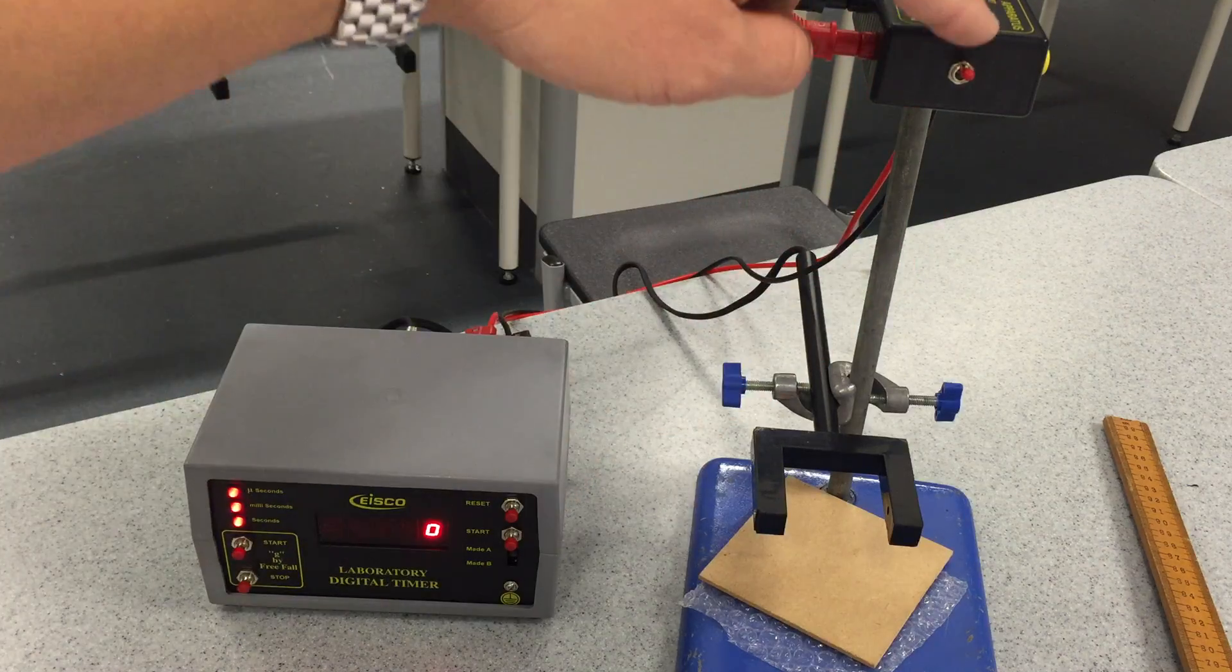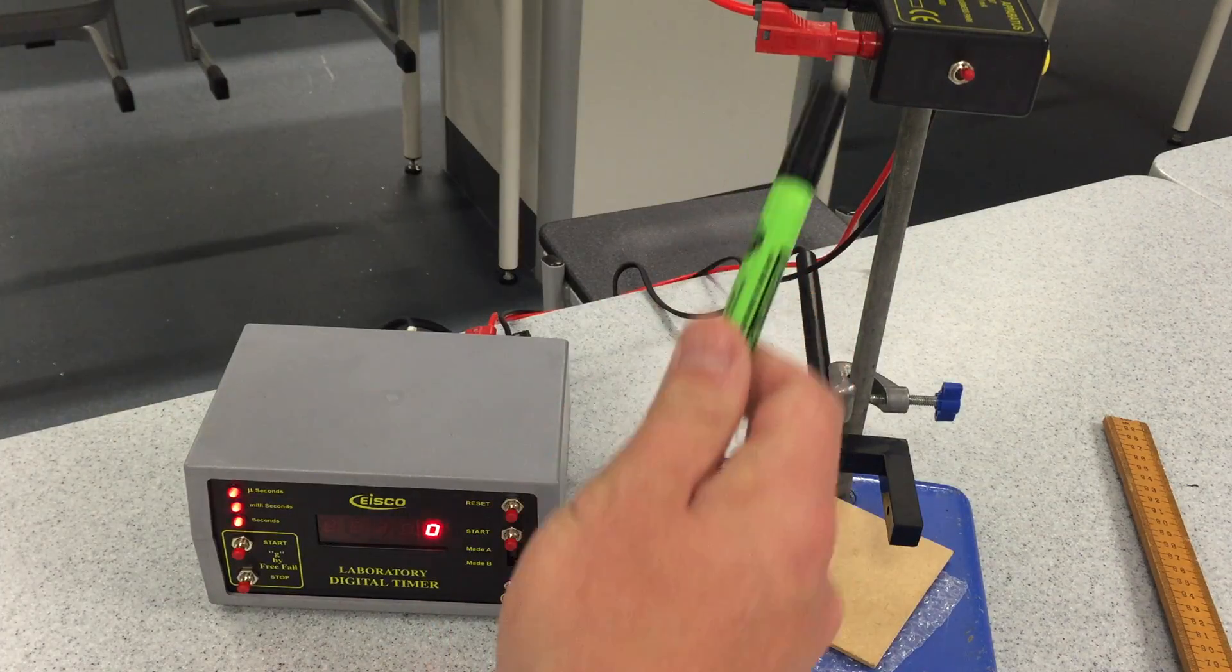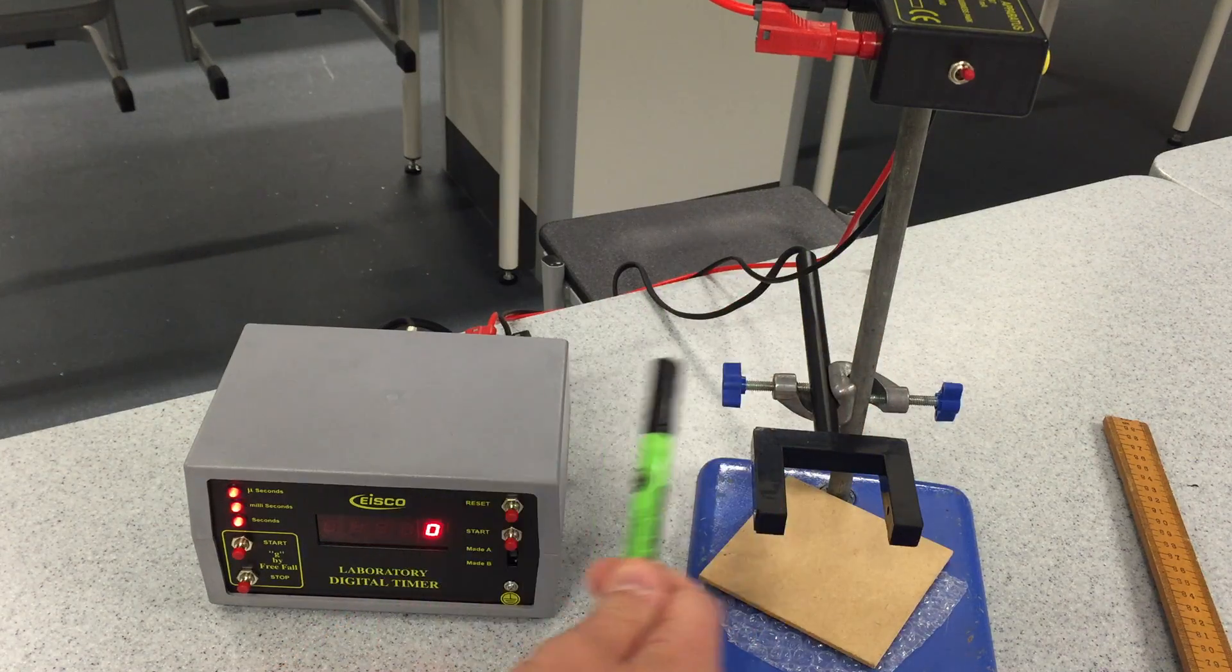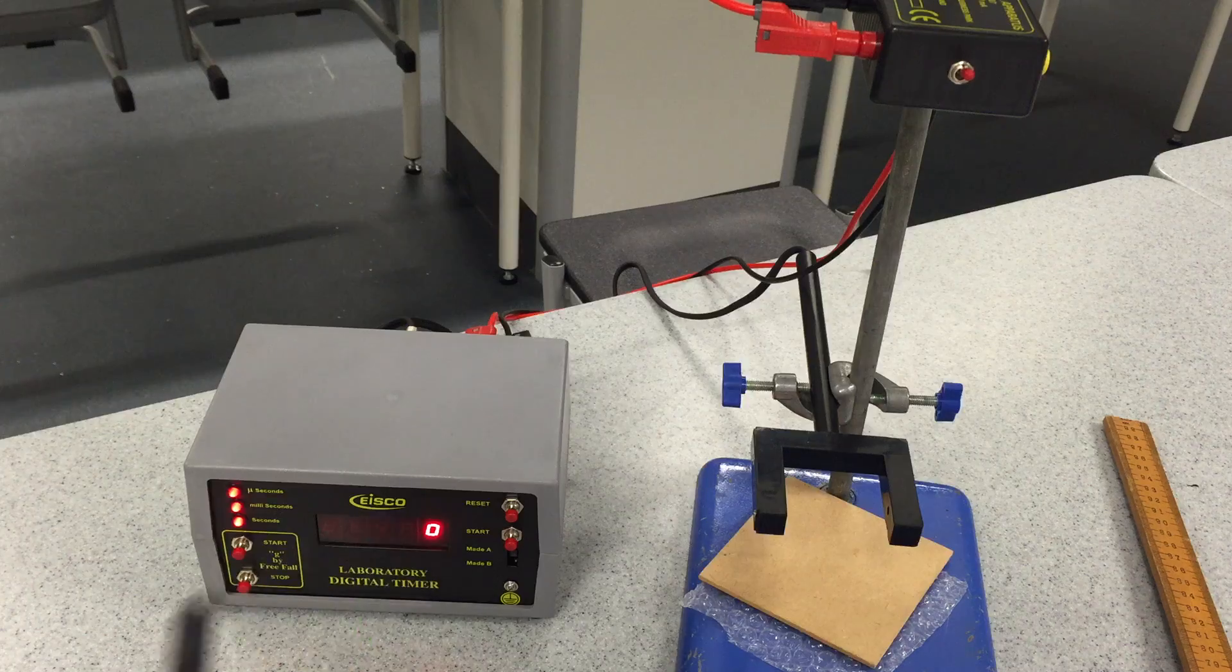And when I turn off the switch, the ball will drop. As it leaves this point, it's going to start timing, and as it goes through the light gate, it will stop timing.